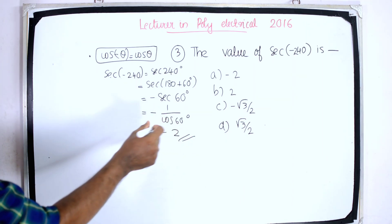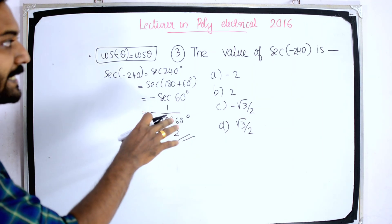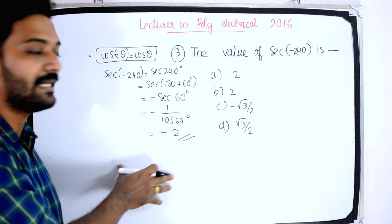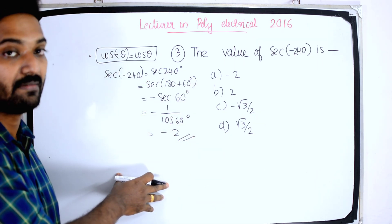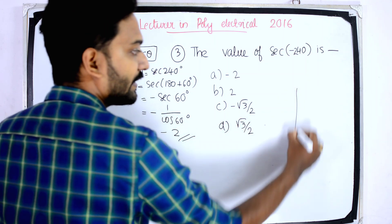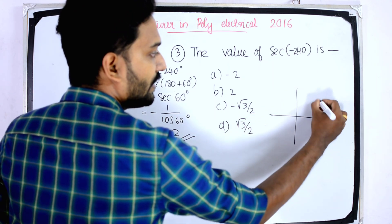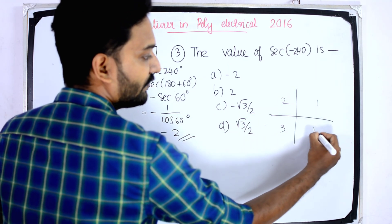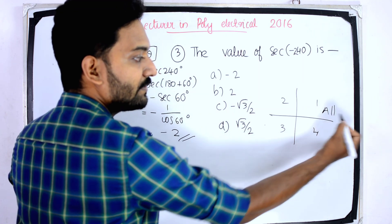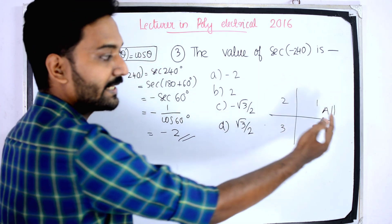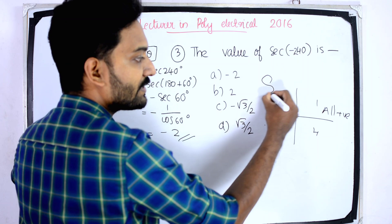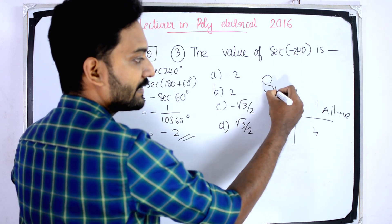The angle −240° falls in the third quadrant. In the third quadrant, cosine is negative. Regarding quadrant rules: in the first quadrant, all trigonometric values are positive. In the second quadrant, only sin is positive (S). In the third quadrant, only tan is positive. In the fourth quadrant, only cos is positive.